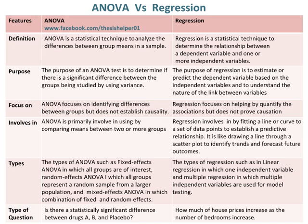A typical question in ANOVA is: Is there a statistically significant difference between drugs A, B, and placebo? Whereas, a typical question in regression is: How much do house prices increase as the number of bedrooms increases?